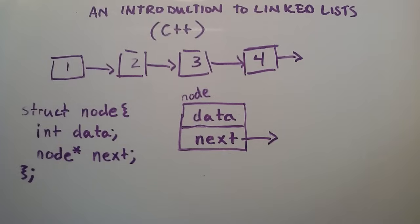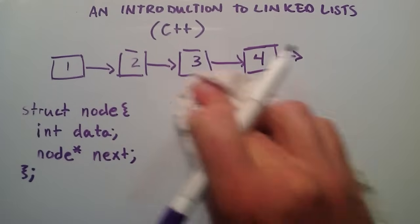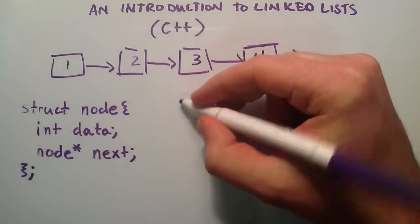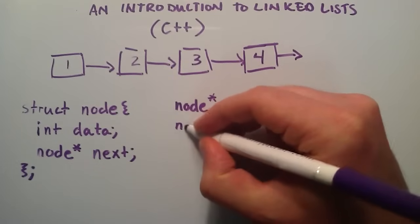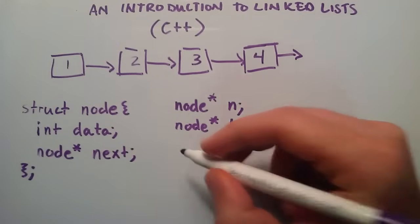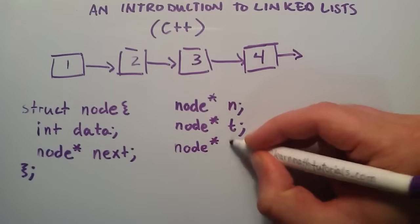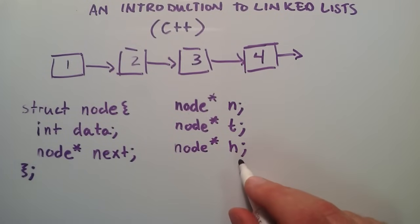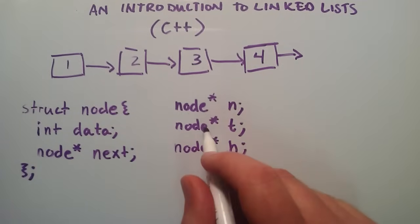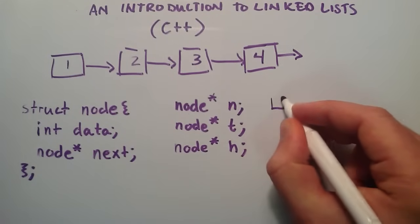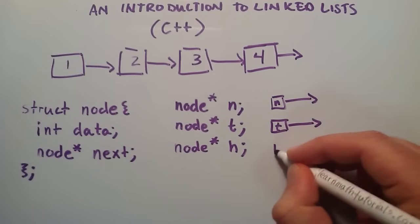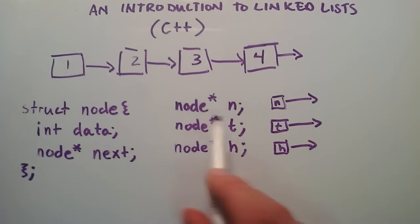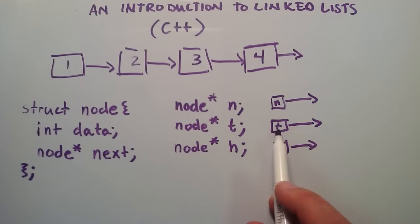Now let's go ahead and write some code and see how this works. What we're going to do is create a few node pointers. I'm going to do 'node* n', then another one 'node* t' for temporary, and 'node* h' for head, or the beginning of the list. By typing these three lines of code, we're creating these little node pointers — n, t, and h — and they each have the ability to point to another node.